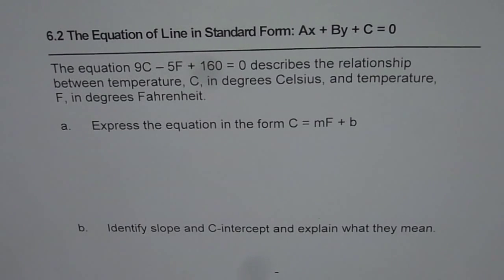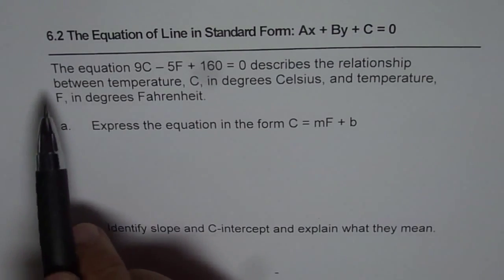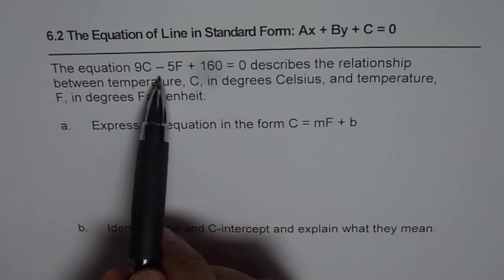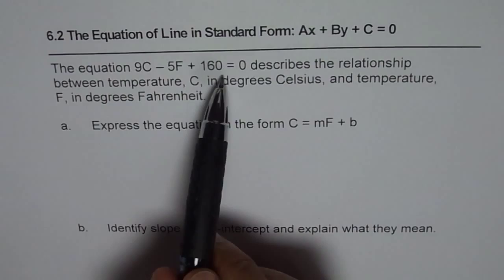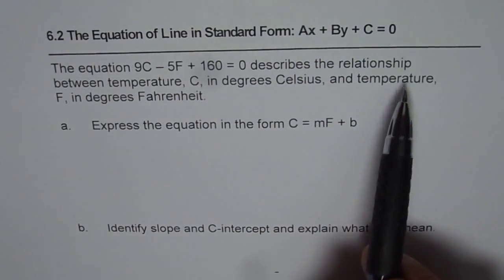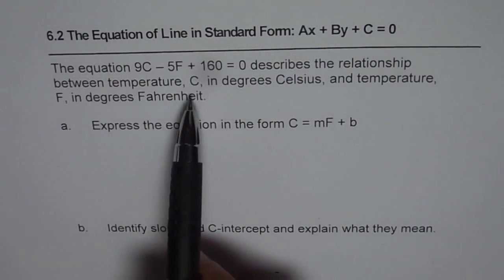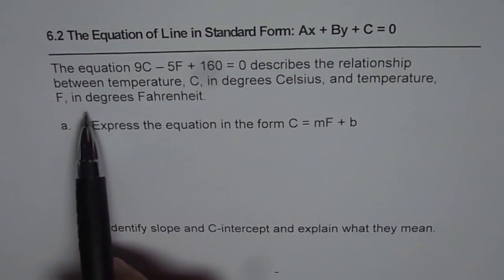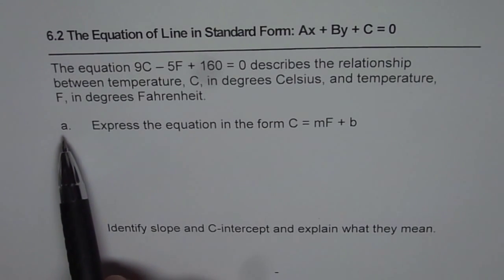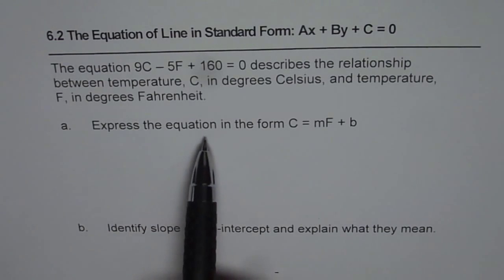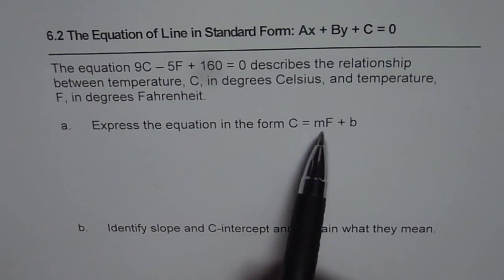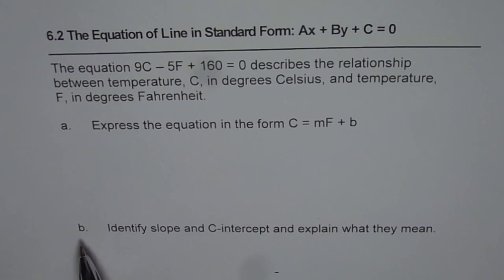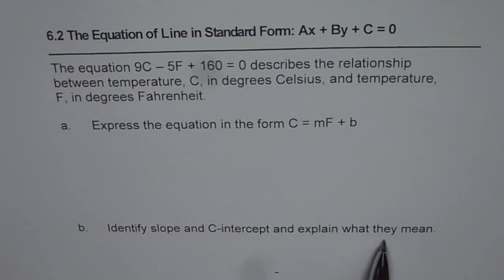I'm Anil Kumar and here is an application question on equation of line in standard form. The equation 9C minus 5F plus 160 equals 0 describes the relationship between temperature C in degrees Celsius and temperature F in degrees Fahrenheit. Part A is to express the equation in the form C equals MF plus B, and Part B is to identify the slope and C-intercept and explain what they mean.